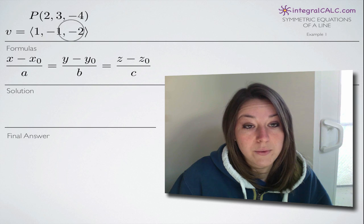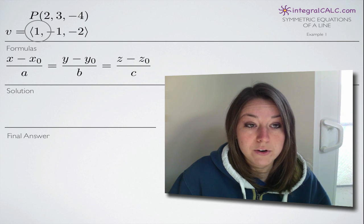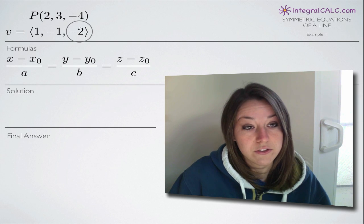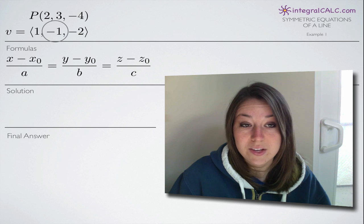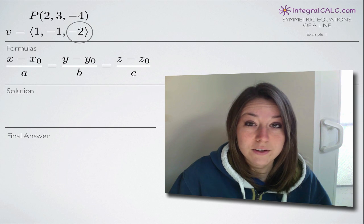And in our vector v, we have our direction numbers a, b, and c. So a equals 1, b equals negative 1, and c equals negative 2.